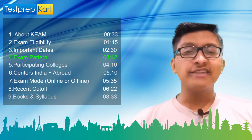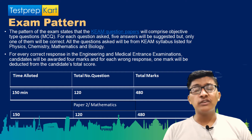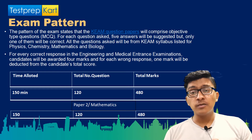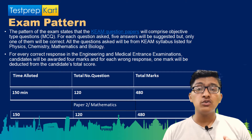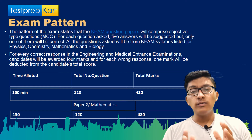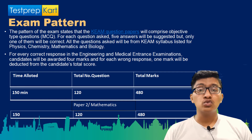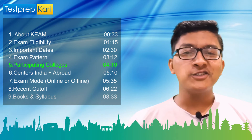Let's discuss the exam pattern for KEAM. There are two papers. Paper 1 covers Physics and Chemistry with 120 questions, each worth 4 marks — a total of 480 marks — with a minus 1 negative marking for wrong answers. Paper 2 is for Mathematics, also with 120 questions, 4 marks each, totalling 480 marks, and minus 1 for incorrect responses. Both papers are of 480 marks each, making KEAM a total of 960 marks. Each paper has a duration of two and a half hours, and the two papers are held on different days.